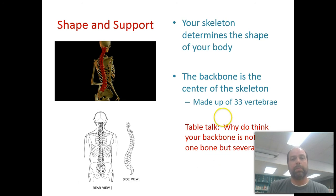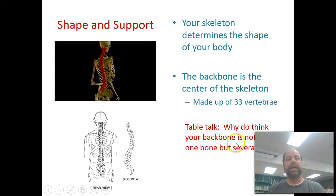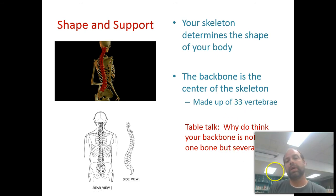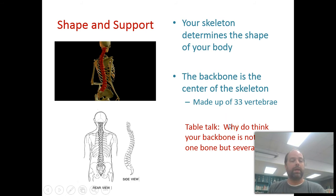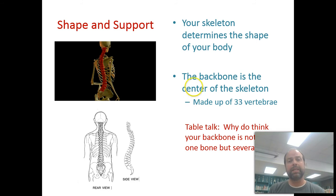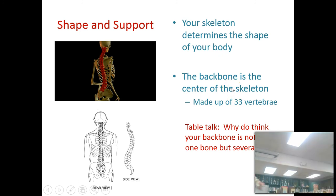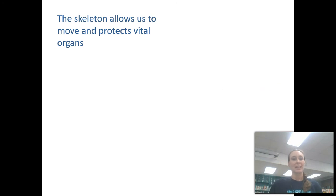Your backbone is the center of your skeletal system and is made up of 33 vertebrae — individual bones that allow you to move in all sorts of directions: left, right, forward, and backward. If it were just one bone, you'd be stiff as a board. A snake, which obviously twists around a lot, typically has about 200 vertebrae, which allows them to twist and turn far more than we can.